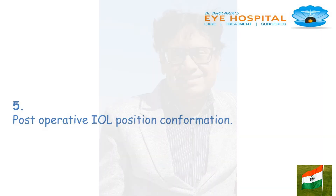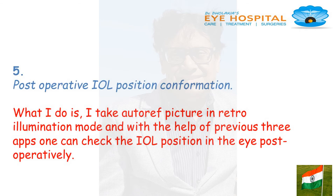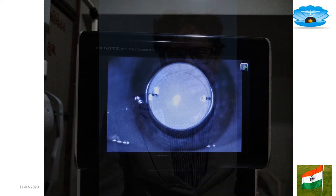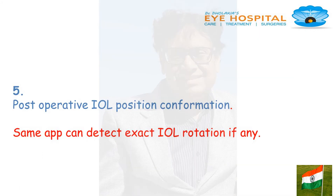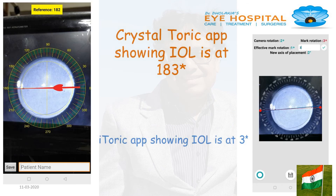Topic 5: Post-operative IOL position confirmation. What I do is take an autorefractor picture in retro-illumination mode, and with the help of the previous three apps, one can check the IOL position post-operatively. This is a retro-illumination picture of the patient's eye post-operatively. The same app can detect exact IOL rotation — here one can see the IOL is set at 183 degrees.